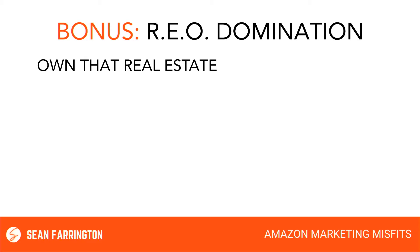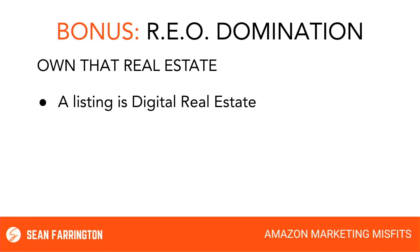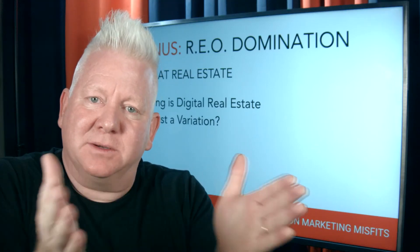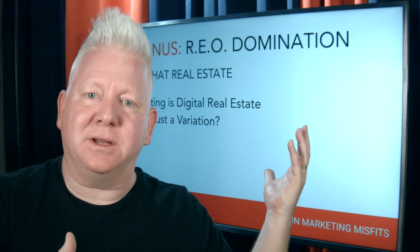It's called REO domination, and the idea is to own more real estate on Amazon. REO stands for Real Estate Owned — perhaps you've heard that term if you've been involved in real estate. In this strategy, we want you to own that real estate on Amazon. We consider a listing as a piece of digital real estate. If owning a little piece of real estate is good, then owning all of the real estate must be better. Why just have a variation? Go for domination by owning more real estate with your current products through multiple listings.